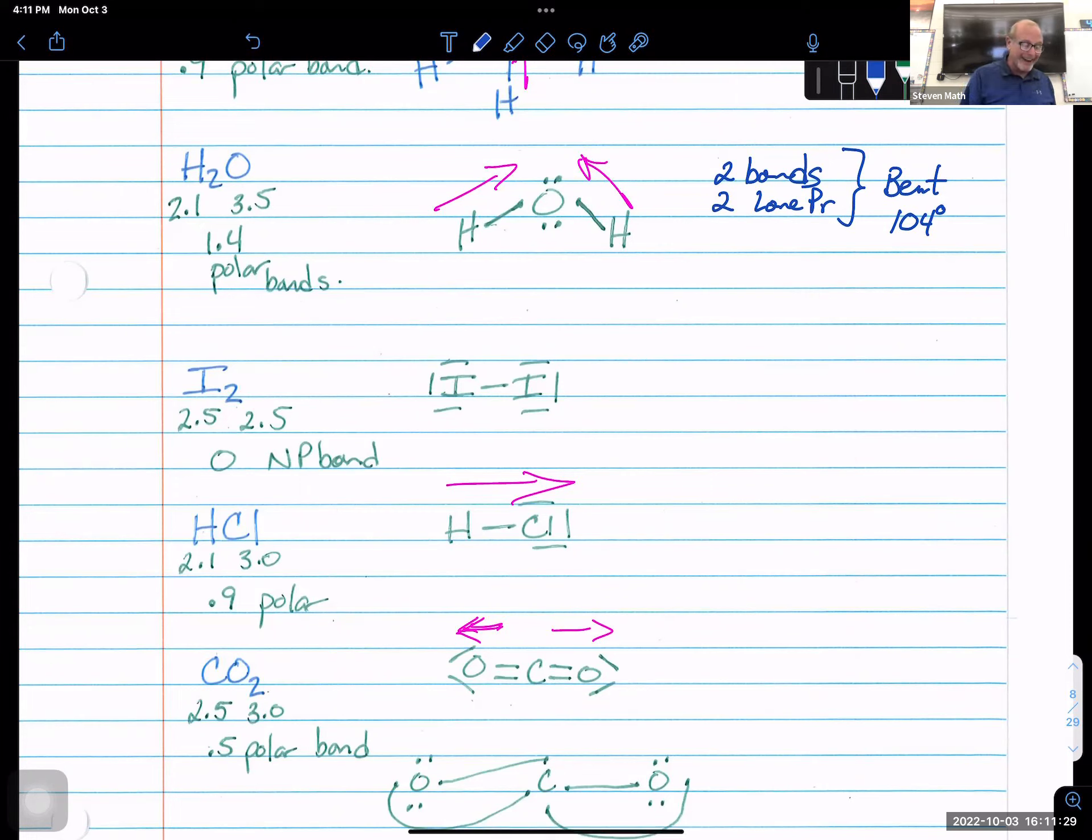Let's look at a diatomic now. I2, iodine. 2.5, 2.5, it's a nonpolar bond. There's no central atom. Everything is very symmetrical. Everything's very clean. You must write all the lone pairs. They have to be present. If the board asks for them, you don't have them. We can't award points for that.